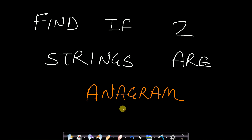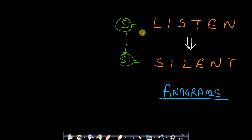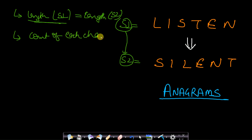Hello guys, welcome back. In this video we will see how to find if two strings are anagrams or not. Let's look at the problem statement. If string S1 is 'listen' and S2 is 'silent', then if S1 can be rearranged to form S2, they are anagrams. The first condition is that the length of S1 must equal the length of S2. The second condition is that the count of each character must be the same.